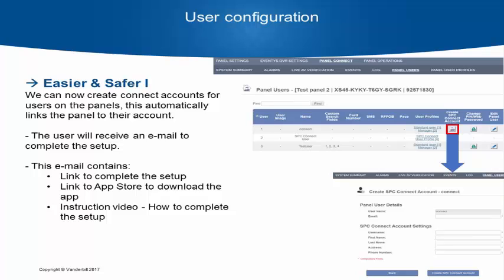The first is that we are now allowing SPC Connect accounts to be created from the company account. So if a customer requires SPC Connect or remote access, by obtaining their postcode and phone number — these must be matched and be consistent — the user can be given a Connect account directly from here. Once we complete this process, the user will receive an email saying that the account has been created and they will be prompted to enter their information. On completion, the panel is automatically added to their account.